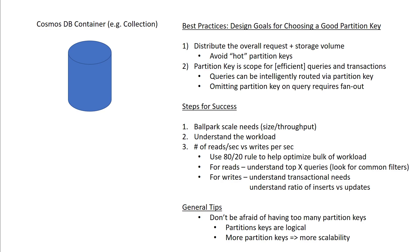As a general and final tip, don't be afraid of having too many partition keys. Partition keys are a logical abstraction, and the more partition key values you have, the more scalability you have. If you only have two partition key values, Cosmos DB can at best scale your workload across two physical partitions. However, if you have a billion partition key values, Cosmos DB can start with a frugal number of physical partitions — even just one — but gives you room to grow up to a billion physical partitions. Given all things equal in terms of optimizing around your workload, if you can choose something more granular, it's generally a good practice to do so.